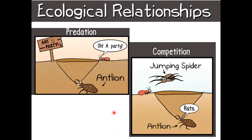Ecological relationships — we're going to start with predation and competition. In predation, you have the item that is going to be eaten and the item doing the eating. Here we have an ant and an ant lion. The ant lion digs a burrow, the ant comes along and falls in, and the ant lion consumes him — predator and prey. In the competition example, two predators are present: the ant lion is ready for his meal, but the jumping spider cuts him off and takes the ant for himself. Through competition, the jumping spider out-competes the ant lion and gets the meal.